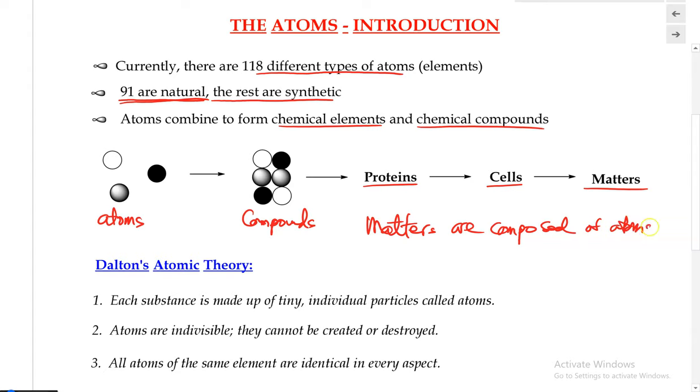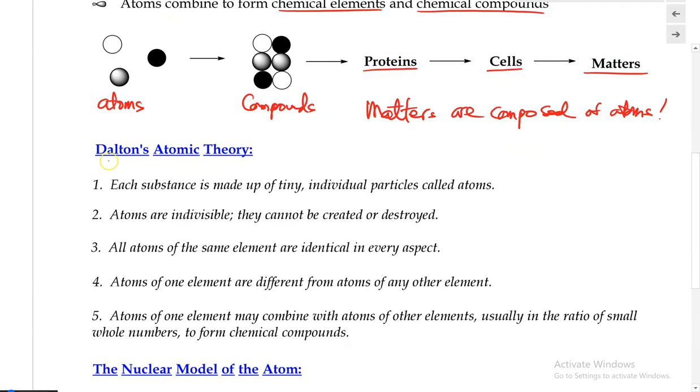And this statement right here is known as Dalton's atomic theory. And here are some additional descriptions of Dalton's atomic theory. So first, each substance is made up of tiny individual particles called atoms.